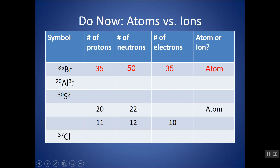Notice this one has a charge — these two are ions. For aluminum with a mass number of 20 and a 3 plus charge: the number of protons is 13, looked up on the periodic table. Neutrons via subtraction: 20 minus 13 is 7. Note that this 20 may differ from the atomic mass on the periodic table — I'm using what's written in the symbol. Electrons are no longer the same as protons because of the 3 plus charge: there are 10 electrons because 3 electrons have been lost. This is an ion.